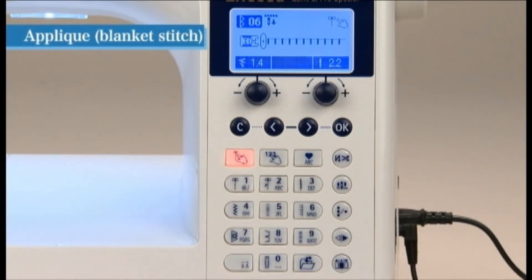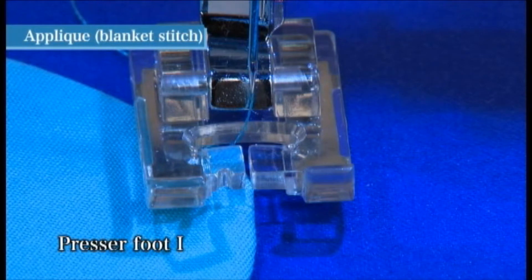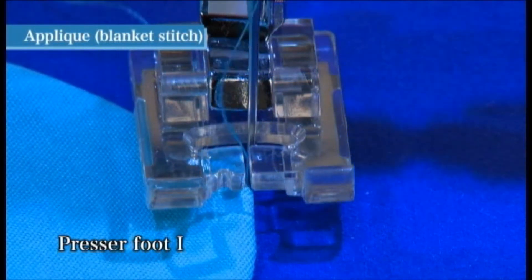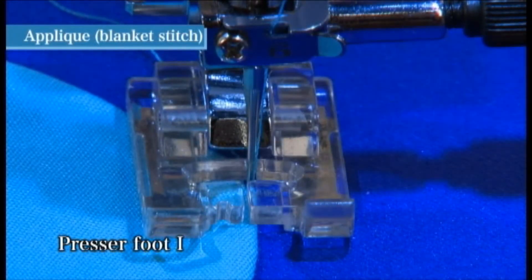Select direct pattern number six. Use the presser foot I or O. Turn the hand wheel towards you so that the needle initially falls outside the applique fabric. When you begin sewing, the machine will automatically sew three lock stitches.